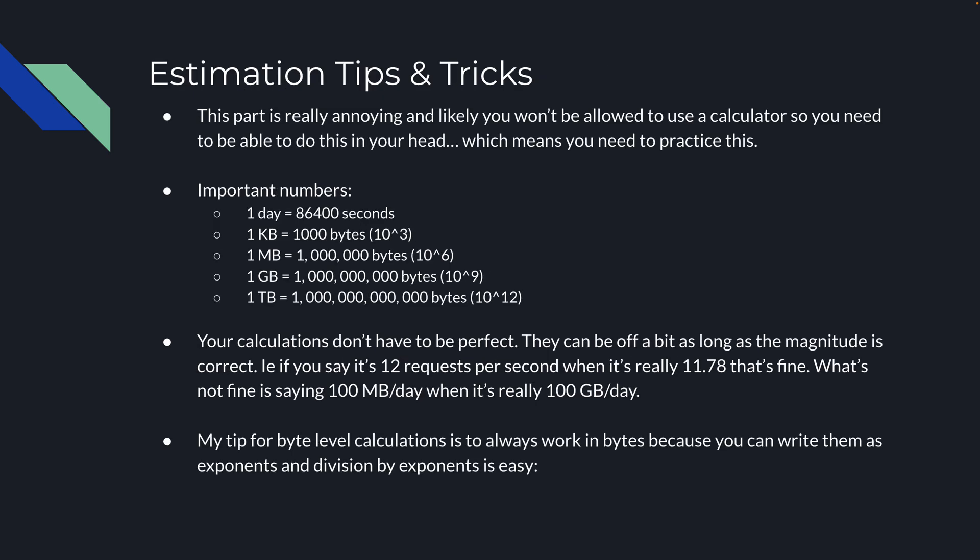Here are some tips for back-of-the-envelope calculations. You likely won't be allowed a calculator, so you need to practice this. Important numbers to know: one day is 86,400 seconds; one kilobyte is 1,000 bytes (10³); one megabyte is 1 million bytes; one gigabyte is 1 billion bytes; one terabyte is 1 trillion bytes. Your calculations don't have to be perfect, but the magnitude must be correct. Saying 12 requests per second when it's really 11.78 is fine; saying 100 megabytes per day when it's actually 100 gigabytes is not — that's a huge difference and your interviewer will likely flag it.